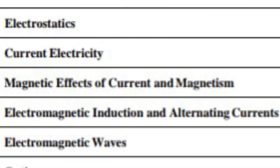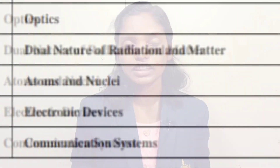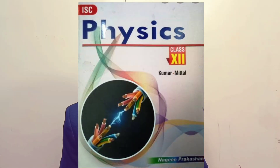The main topics for this year are: electrostatics, current electricity, magnetic field of current and magnetism, electromagnetic induction and alternating currents, electromagnetic waves, optics, dual nature of radiation and matter, atoms and nuclei, semiconductor or electronic devices, and the final module is the communication system. So these are the 10 modules of physics you are going to learn in class 12 ISE. I am referring to the Newton Physics class 12 for ISE board, which divides these 10 modules into 35 small chapters.